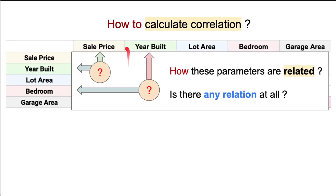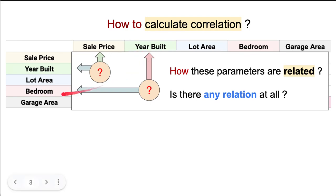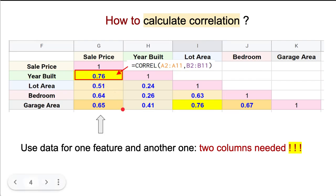To calculate correlation between all your available data, you need to prepare the correlation matrix. Place the names of the features in a row and the same names in a column. Next, you will calculate the value between two pairs — for example, year of build and number of bedrooms, or sale price and year of build. The formula between features is CORREL, and two columns are needed, for example A and B.